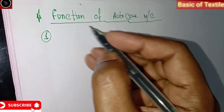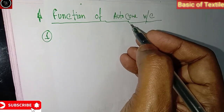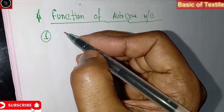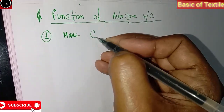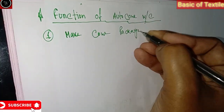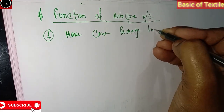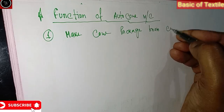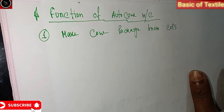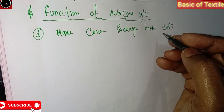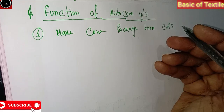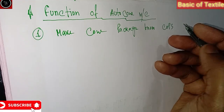Number one: to make packages from cops. The Autoconer takes cops and converts them into a cone or ortho package for recording.